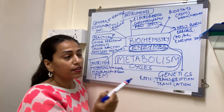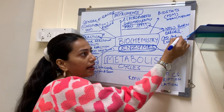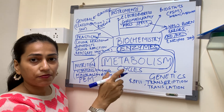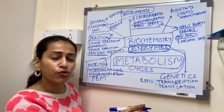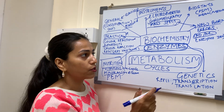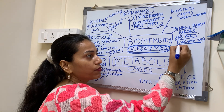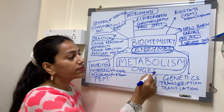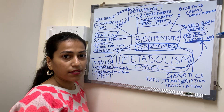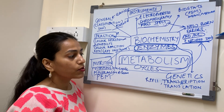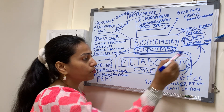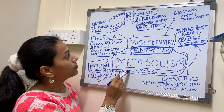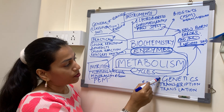For inborn errors of metabolism, you should know which errors are autosomal dominant and which are autosomal recessive. You should also know which enzyme deficiency leads to which disorder. This is how cycles are connected to inborn errors. Cycles are also connected to vitamins and to genetics.